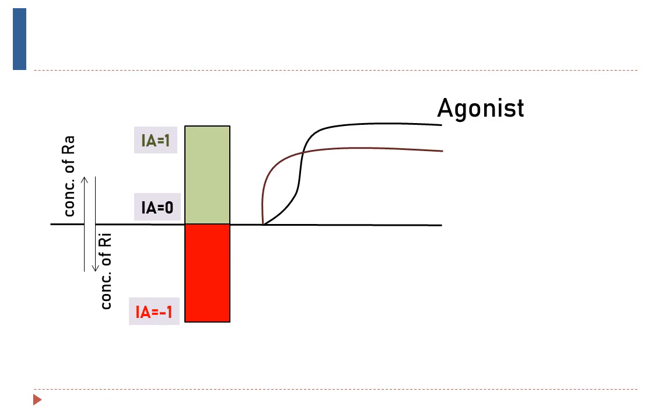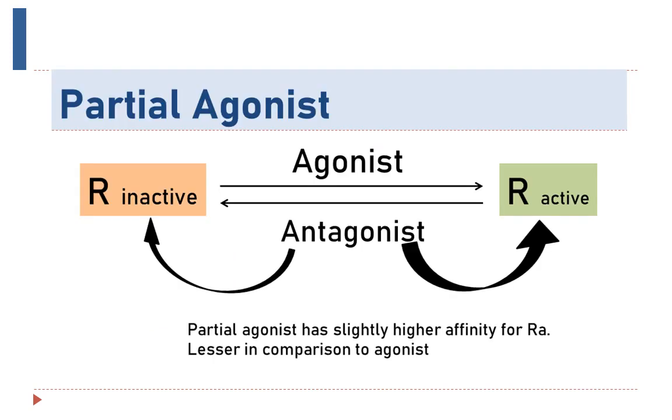The partial agonist have full affinity to the receptor but with low intrinsic activity and hence these are only partly as effective as agonist. We can have the example of pentazocine, a narcotic analgesic, which is a partial agonist at the mu receptor subtype of opioid receptor. When the partial agonist influences the relative distribution of active and inactive receptor in a slightly different manner, these have slightly higher affinity for the active state than the inactive state. Such drugs therefore display an intermediate effectiveness between the agonist and the antagonist.